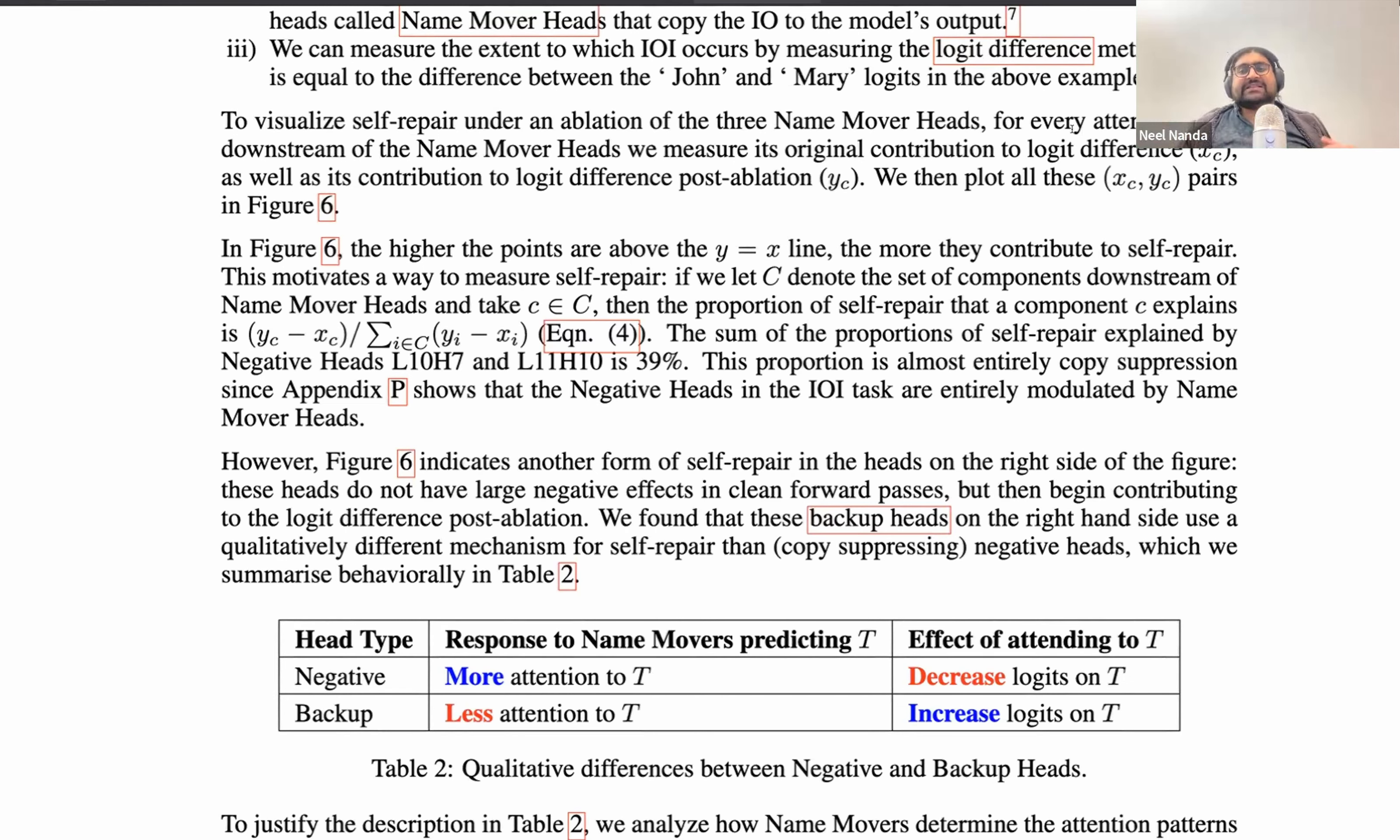This is kind of surprising. And a true question is, what's up with this? One mechanism is copy suppression. As we discussed earlier, conceptually, copy suppression can lead to self-repair because there's a big copying effect, it's suppressed a bit, and when you delete the copying, you also delete the suppression. So the deletion is compensated for somewhat. We find that this is part of, but not all of, the self-repair.